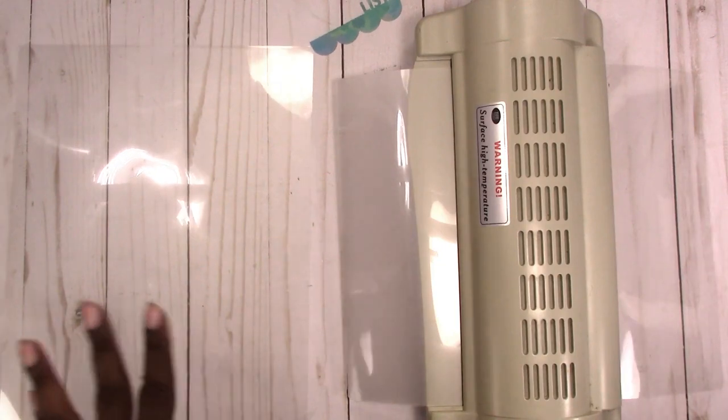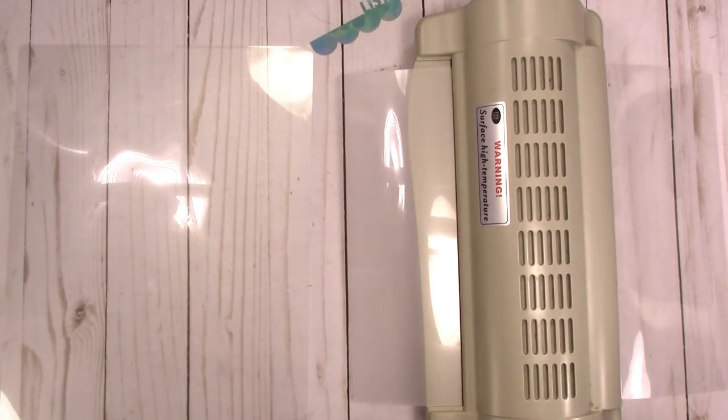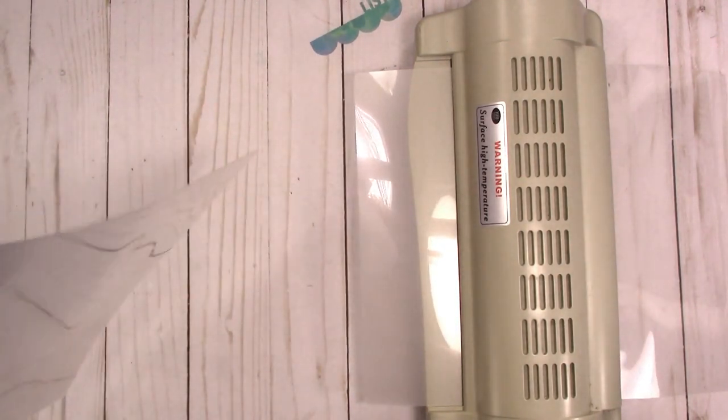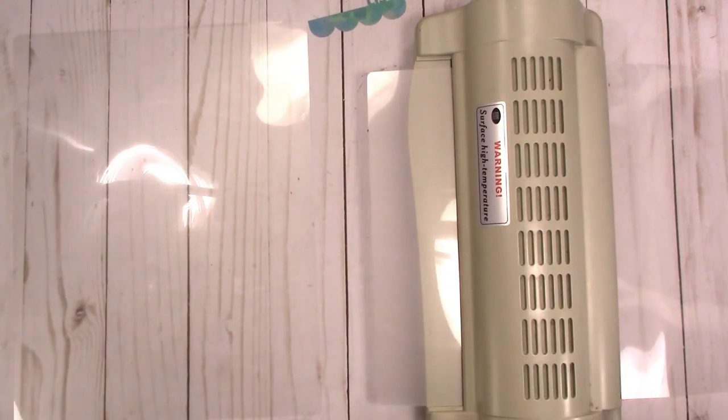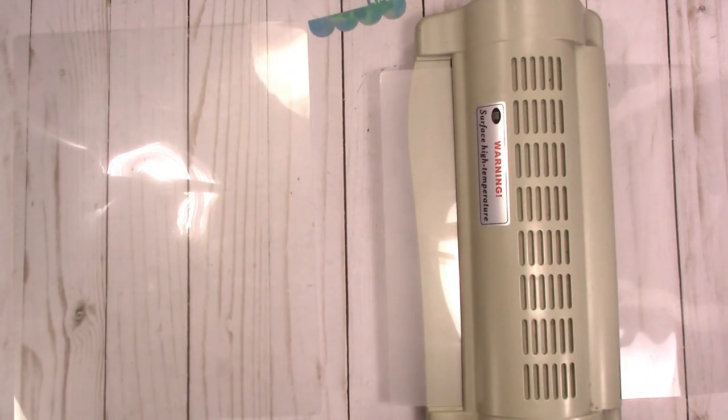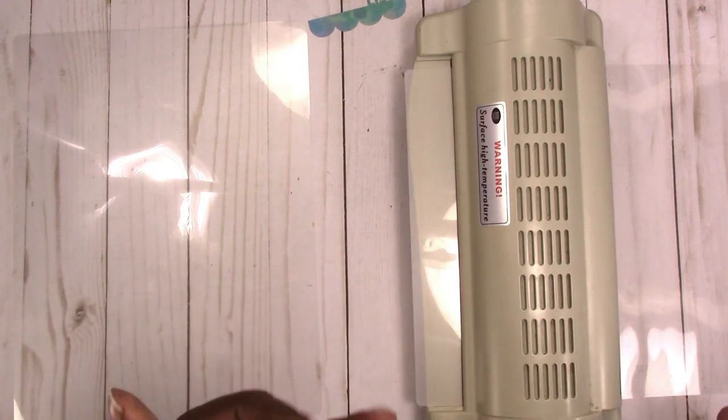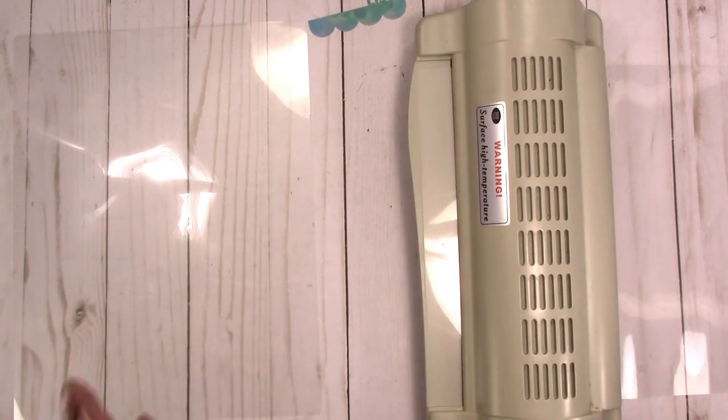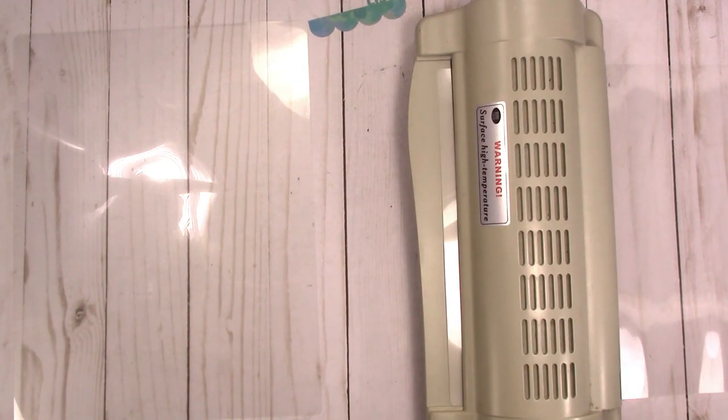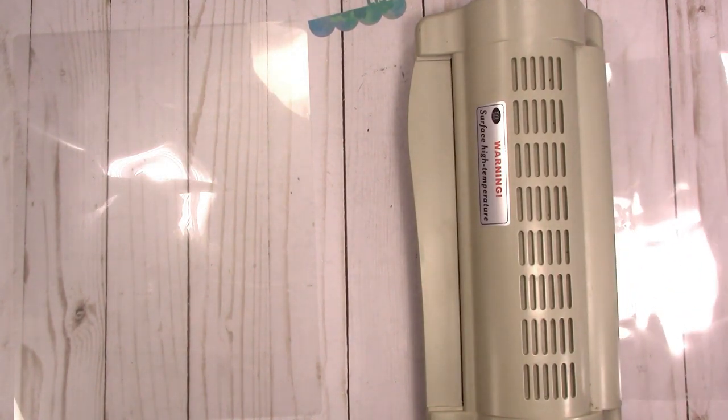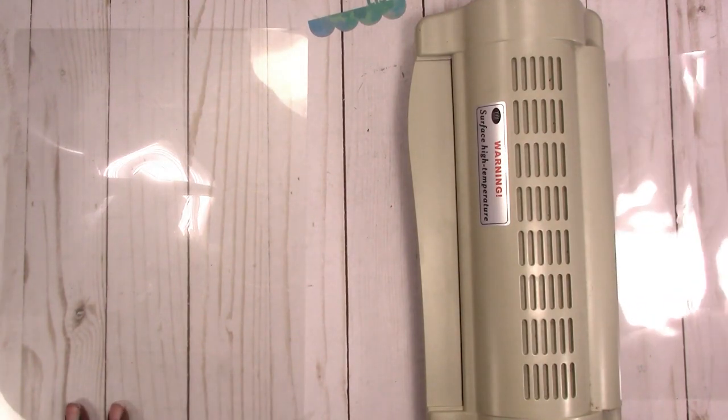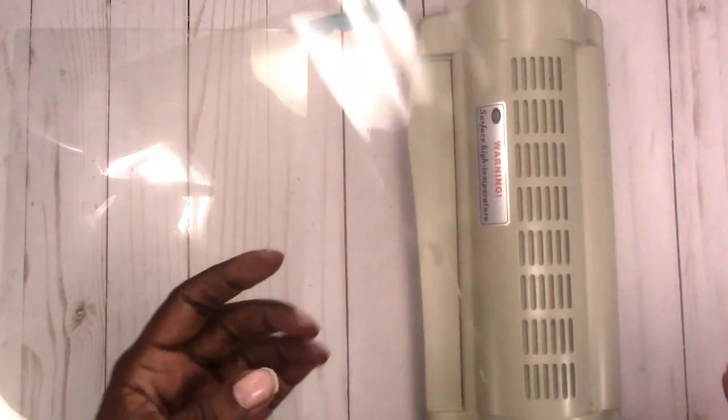This method should probably work too if you didn't have a 5 mil and a 3 mil. You could probably just use two 3 mil, it should still work fine. I may be doing a little overkill with the thickness, but I just want it to be really sturdy and not flimsy.